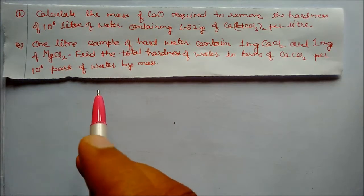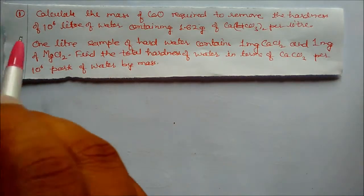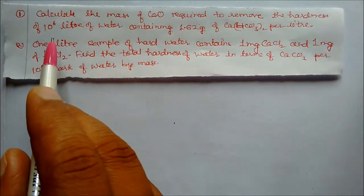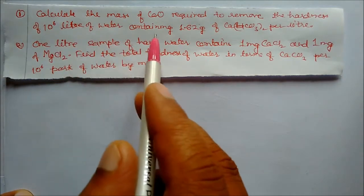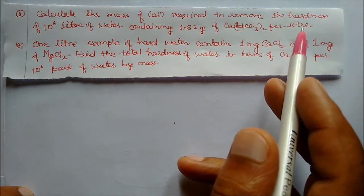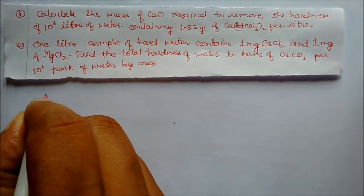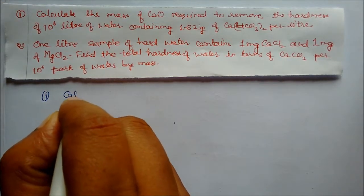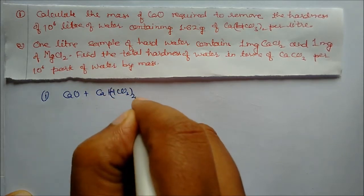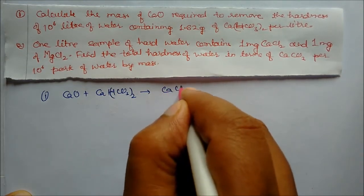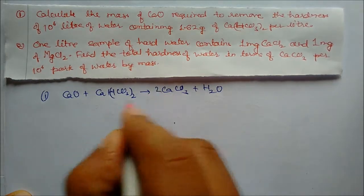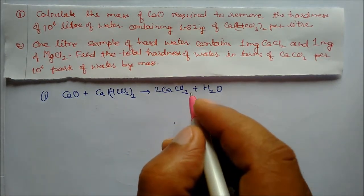This problem is based on parts per million, PPM. The question is: calculate the mass of calcium oxide required to remove the hardness of 10 to the power 6 liters of water containing 1.62 grams of calcium bicarbonate per liter. The reaction is: CaO + Ca(HCO₃)₂ → 2CaCO₃ + H₂O. This is the balanced equation.